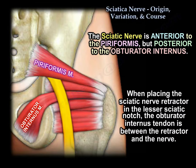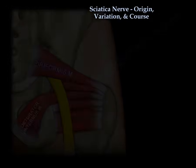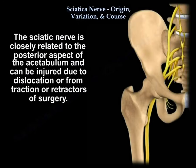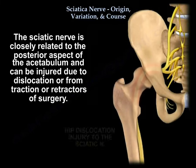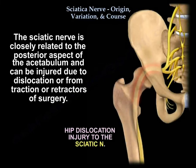When using a sciatic nerve retractor in the lesser sciatic notch, the obturator internus tendon is between the retractor and the nerve. The nerve is closely related to the posterior aspect of the acetabulum and can be injured from dislocation, traction, or retractors during surgery.